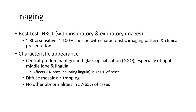The characteristic imaging pattern shows central predominant ground-glass opacity, especially of the right middle lobe and lingula, affected in more than 90% of cases, often with mosaic air trapping and no other abnormality in 57 to 65% of cases.